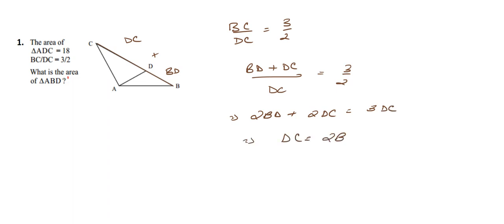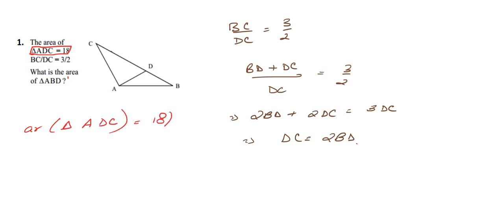Therefore DC is equal to twice of BD, so BD is half of DC. We have now got our relation between DC and BD. We also have the data that the area of triangle ADC is equal to 18.